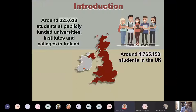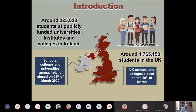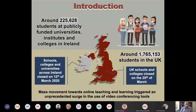As academics, we saw a very sudden shift in teaching from face-to-face or on-campus to online teaching. Here in Ireland we have more than 225,000 students in higher education, mostly in public universities. In the UK there are near 2 million students. Universities and schools were closed in Ireland around the 12th of March, and similarly in the UK around that time.